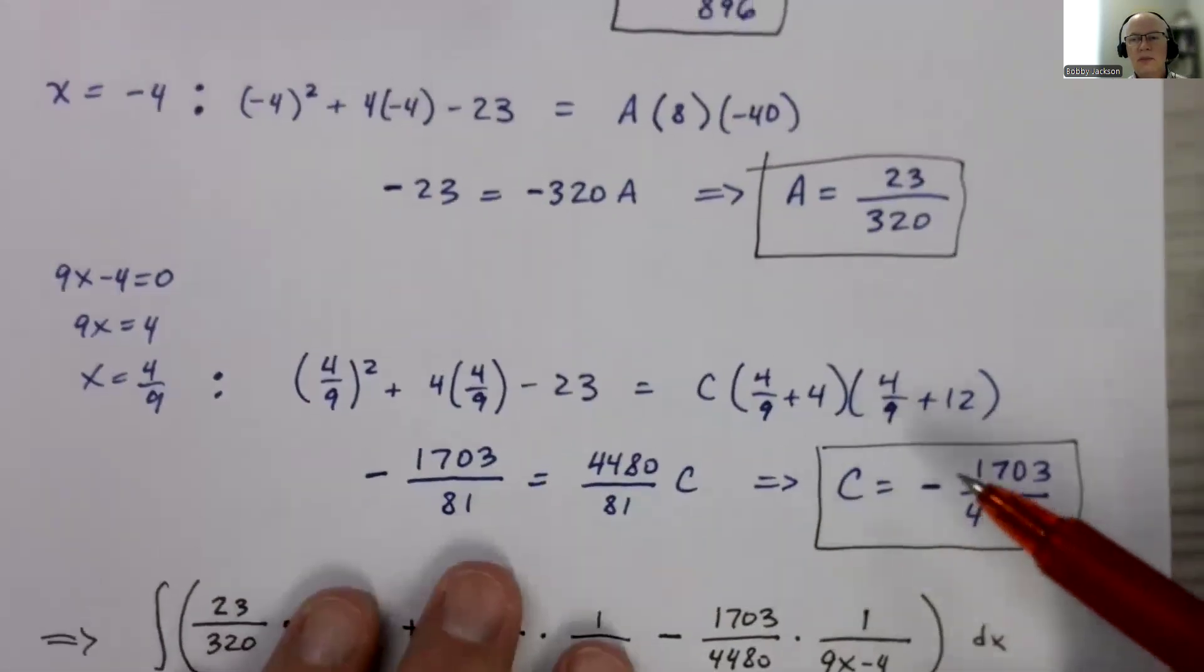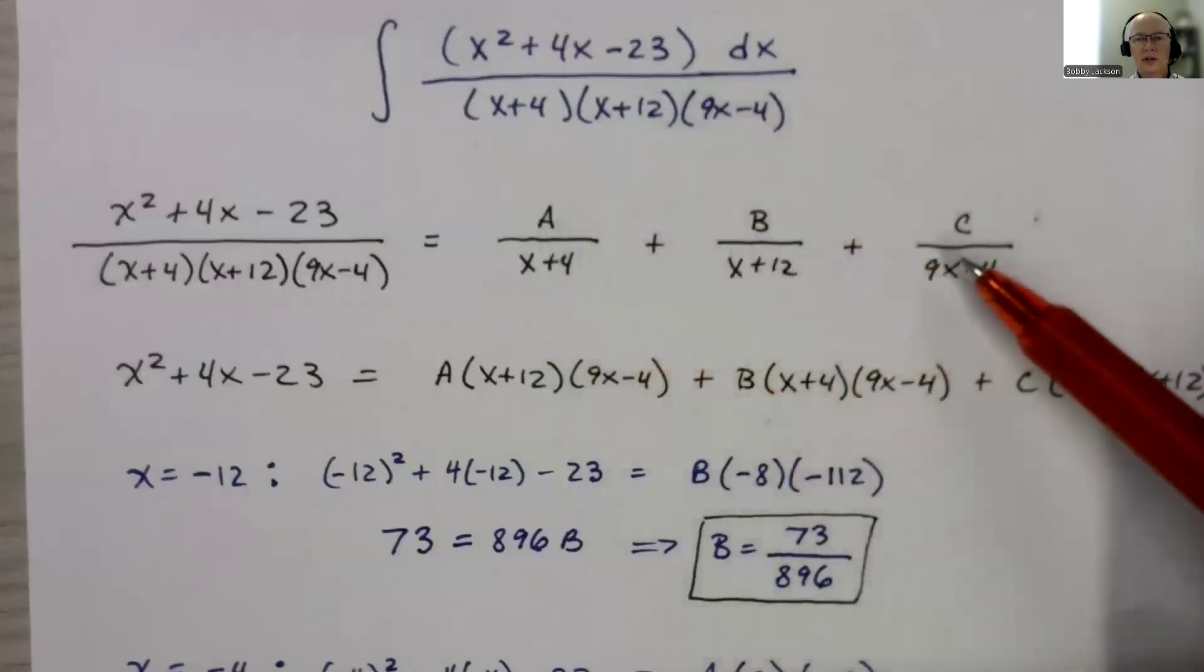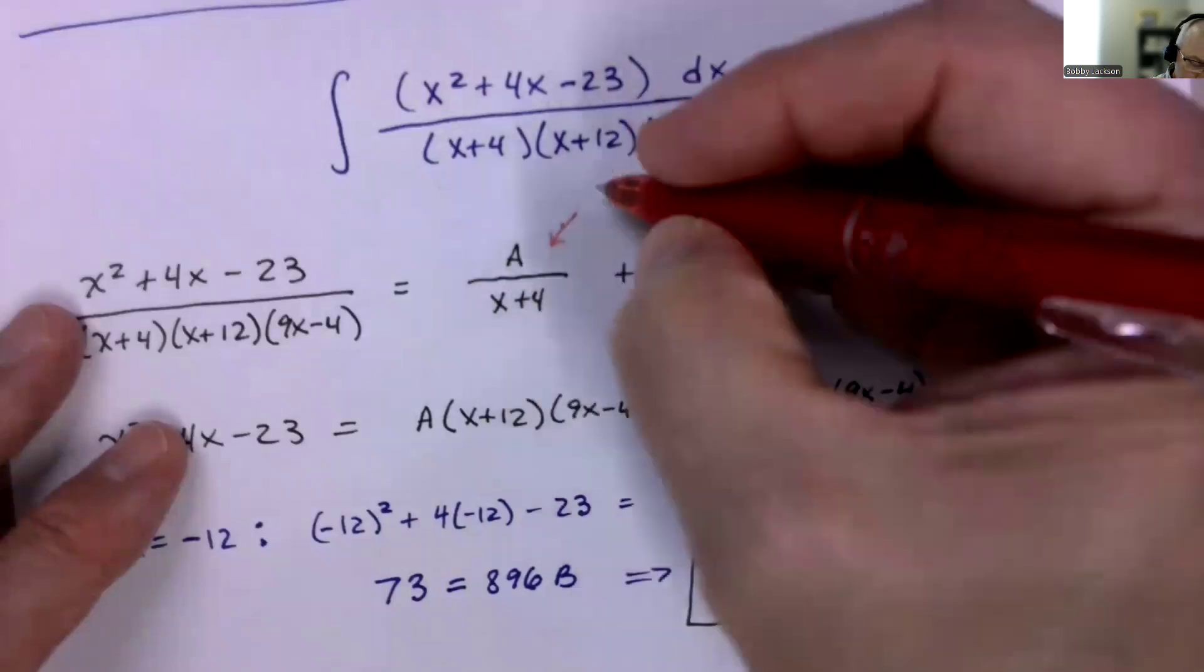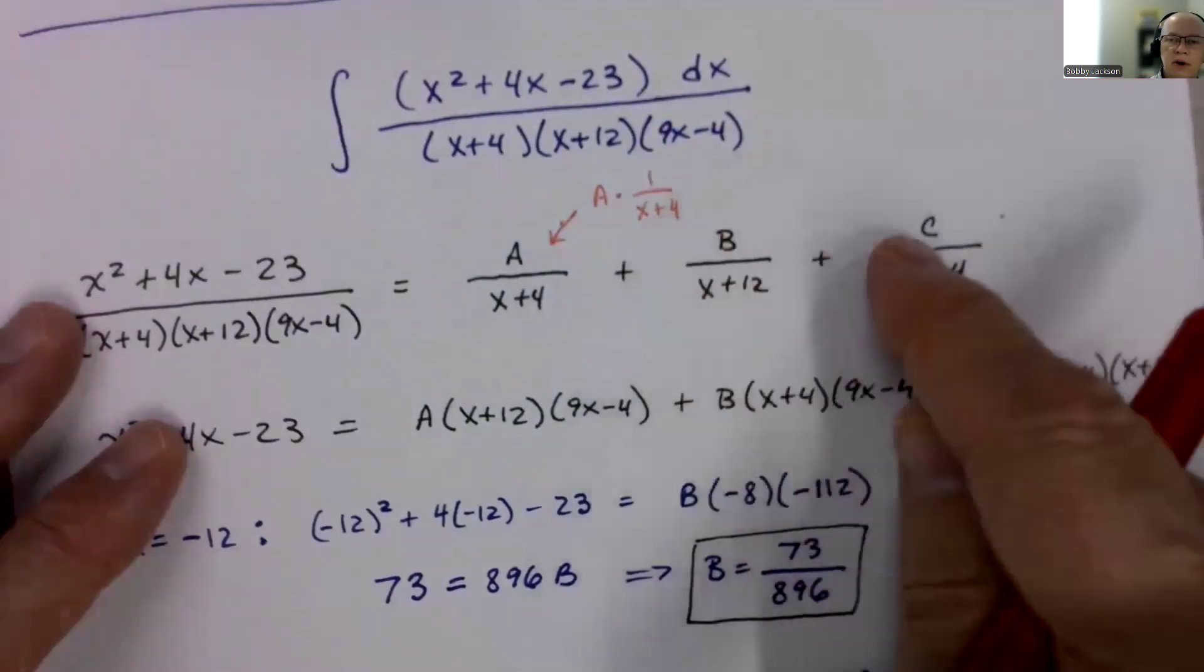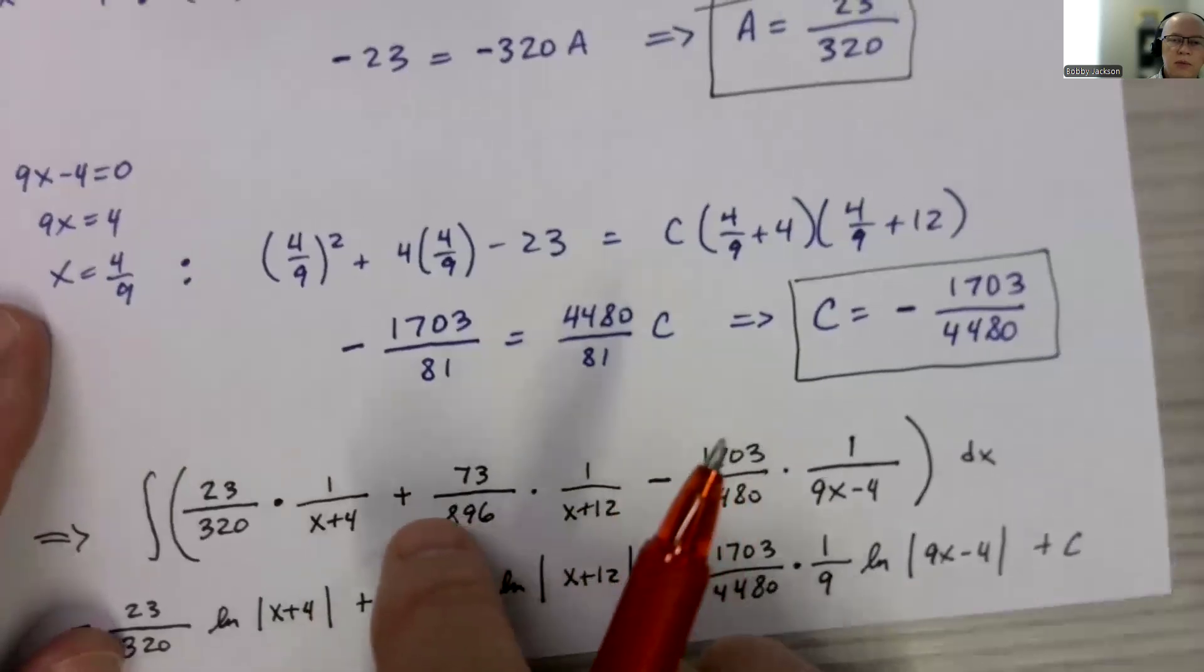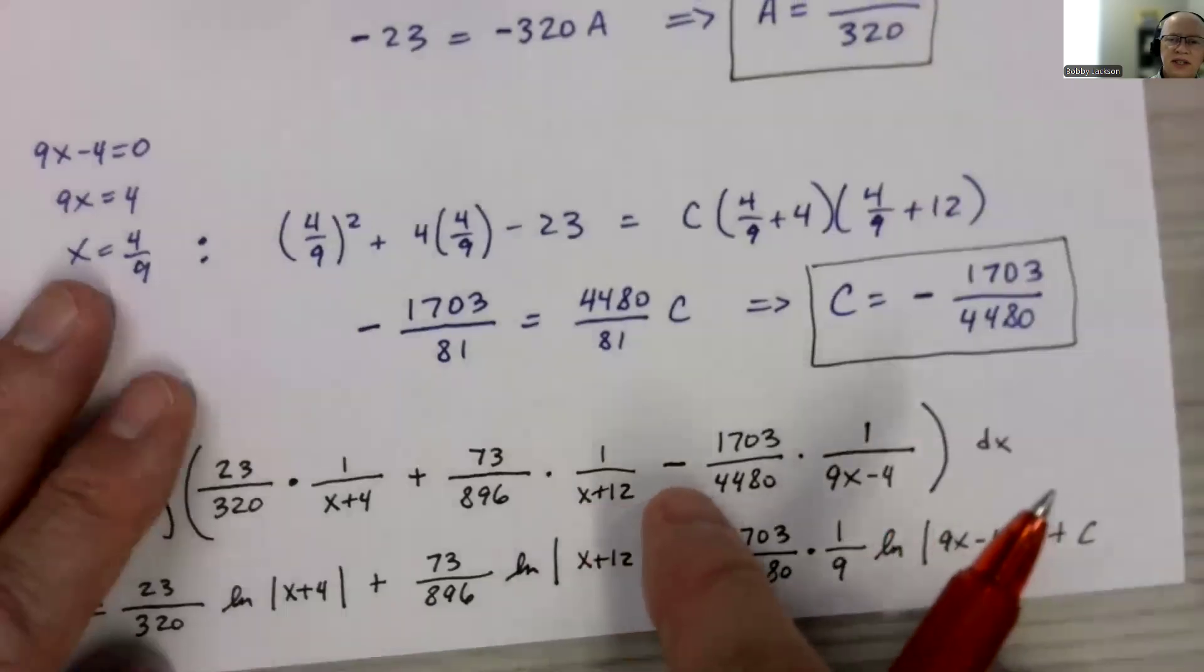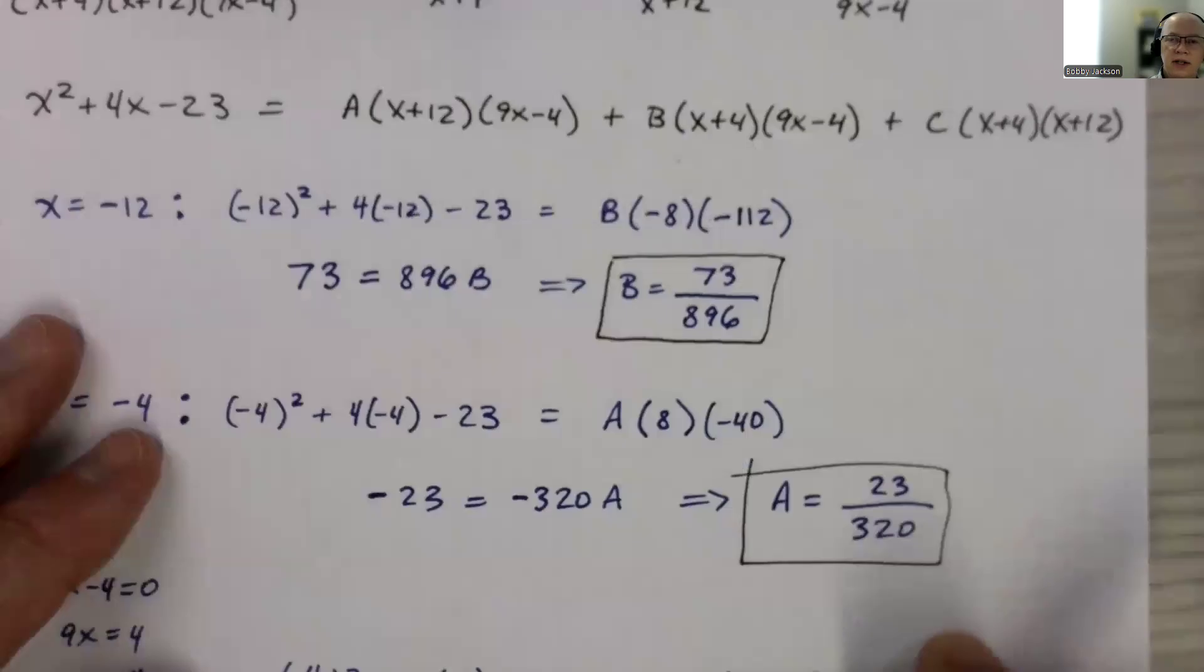So, bottom line is we found the values of A, B, and C. I can now integrate this function here by integrating these three fractions. I'm going to replace A with 23 divided by 320, and I'm going to bring the A out in front. In other words, A divided by x plus 4, that can also be written as A times 1 over x plus 4. So I'm just going to write it in that form. In fact, I'm going to do that for all these constants to make it a little bit easier. So I get A, which is 23 over 320 times 1 over x plus 4, and then plus, I'm going to bring the B down. Remember, B was 73 divided by 896, and that's times 1 over x plus 12. And then plus C, but C is negative, so plus and negative, I get minus C times 1 over 9x minus 4.